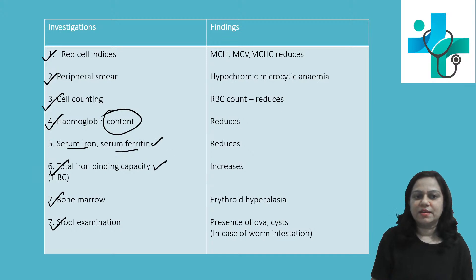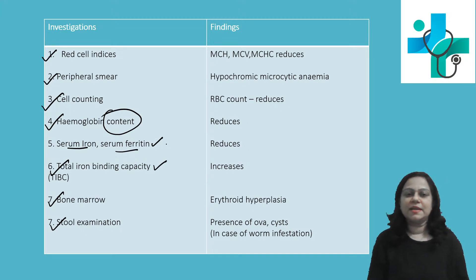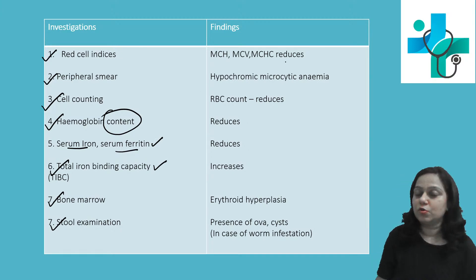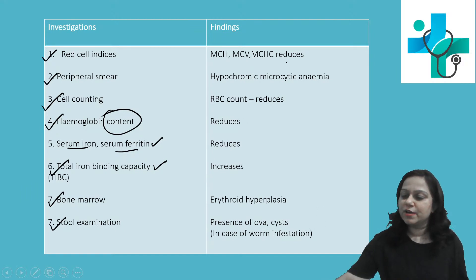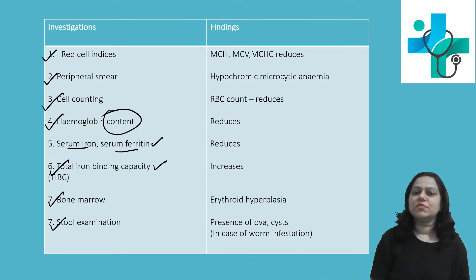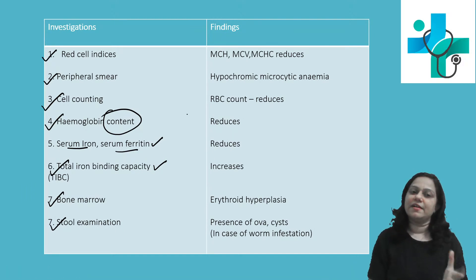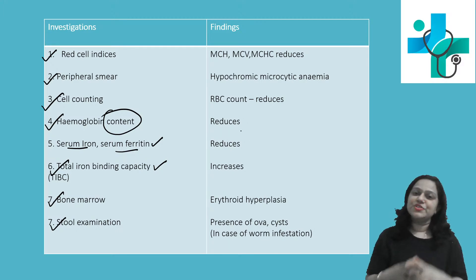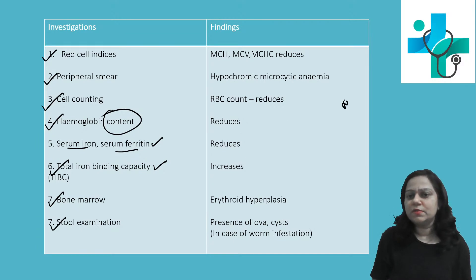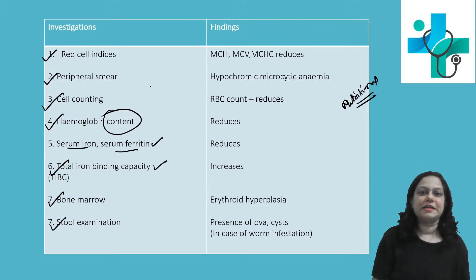Serum iron, serum ferritin, and total iron binding capacity — these are the investigations we usually go for in diagnosing or confirming iron deficiency anemia. Iron deficiency anemia is a very common nutritional deficiency anemia.